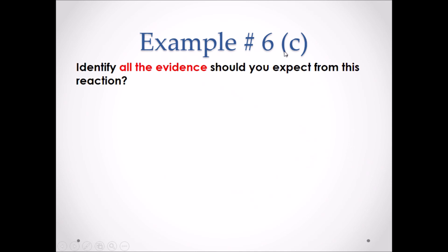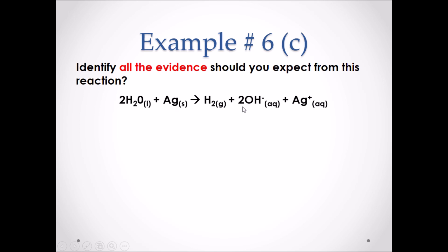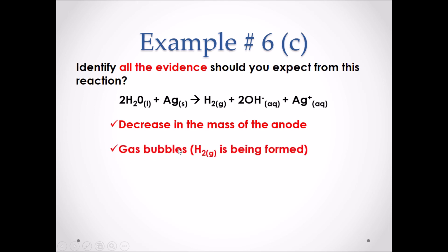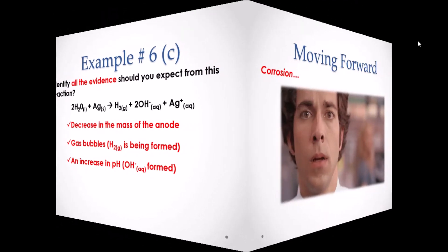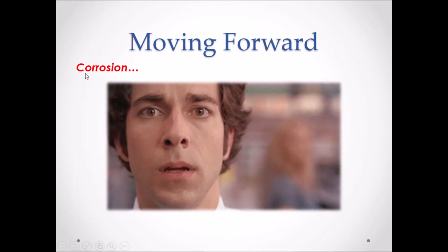Example 6c: identify all the evidence you should expect from this reaction. To answer this we need to know the full redox reaction occurring in the cell. We've already identified that the mass of the anode will decrease. We should also see gas bubbles being formed from the production of H₂, and we should see an increase in the pH of the solution because OH⁻ ions are being formed.